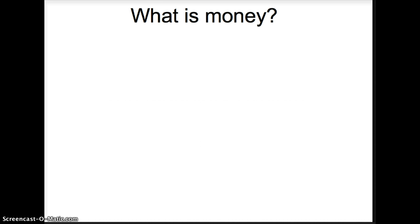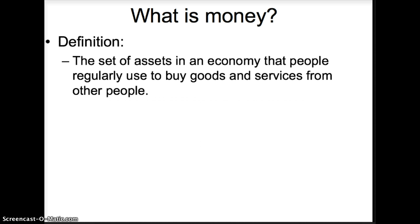What is money? Economists define money as the set of assets in an economy that people regularly use to buy goods and services from other people. Money has taken many forms throughout history. We have used spices, gold coins, cigarettes, and green pieces of paper with pictures of dead presidents on them as money.